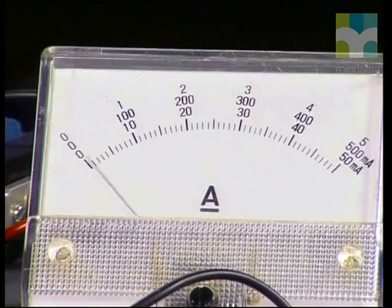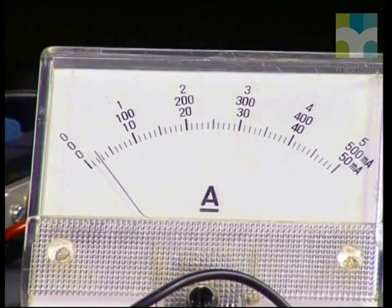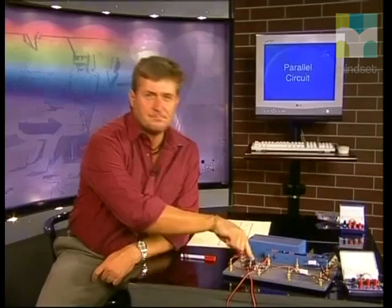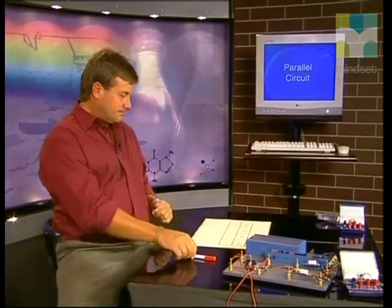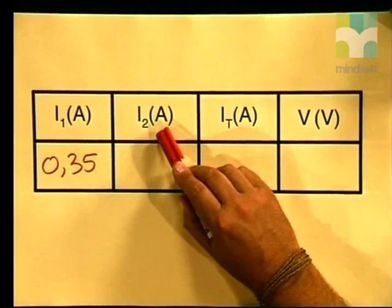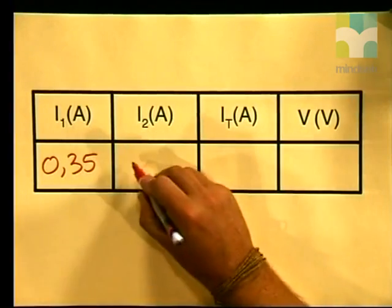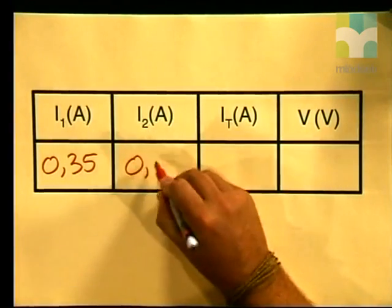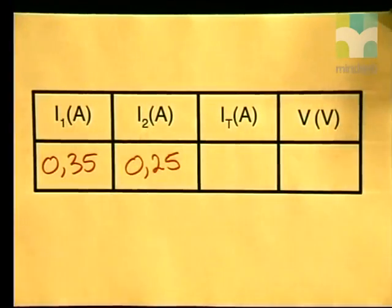Let's now measure the current passing through R2. Notice that the needle has settled on 0.25 amperes. Let's write that back onto our table — I2, which measures the current through R2, is 0.25 amperes.